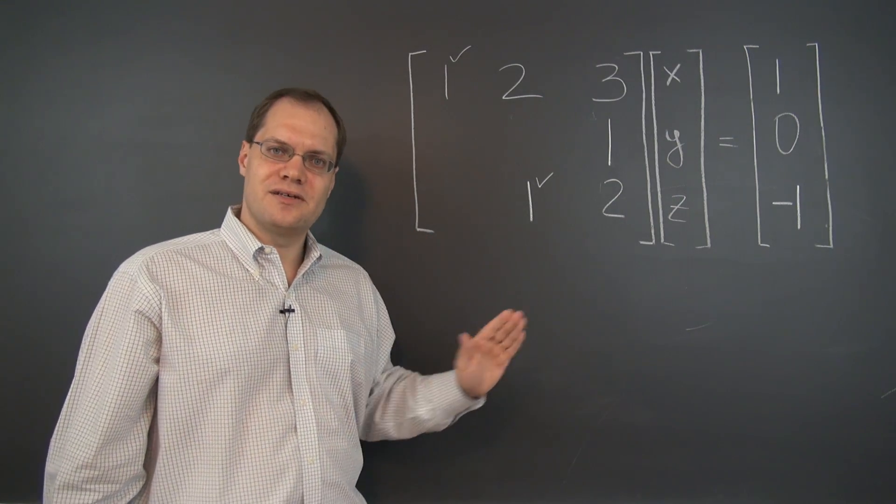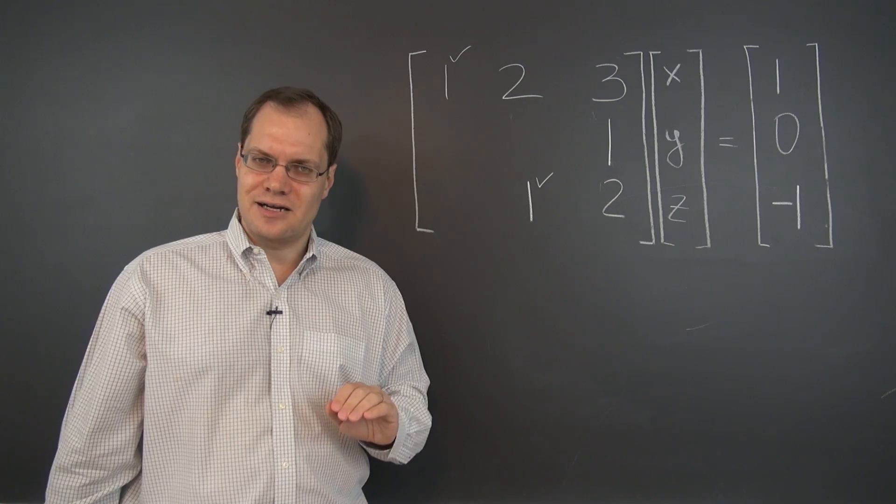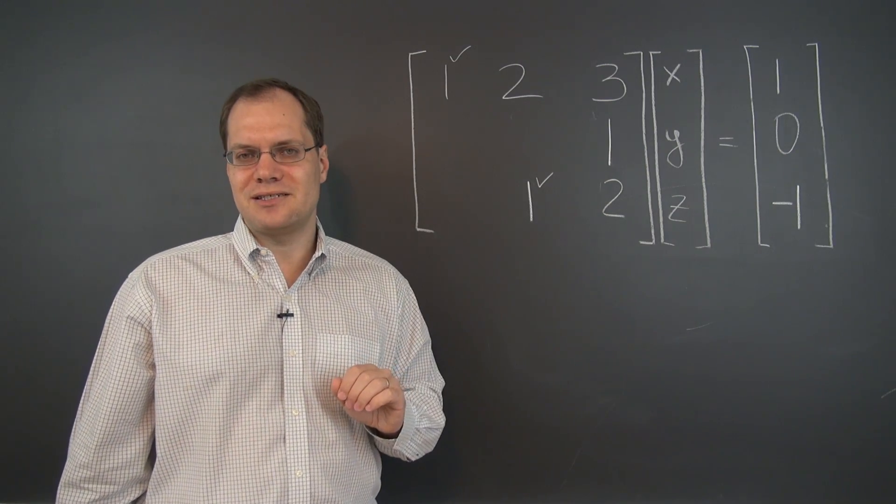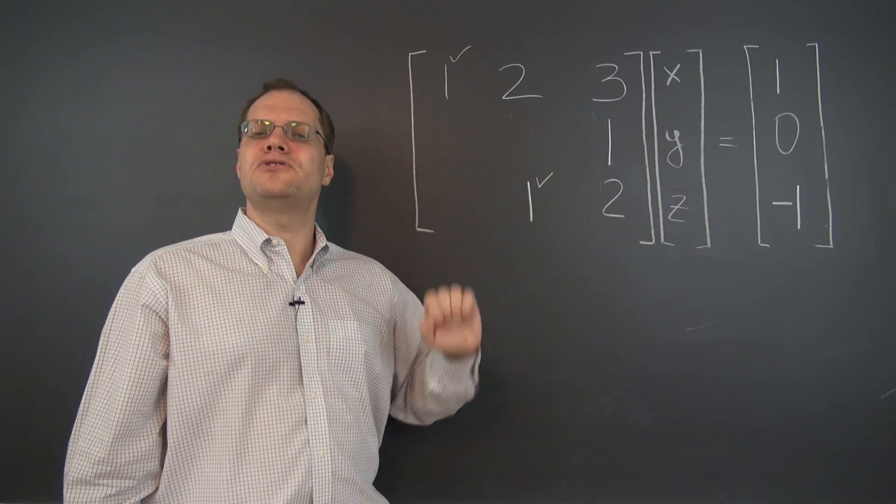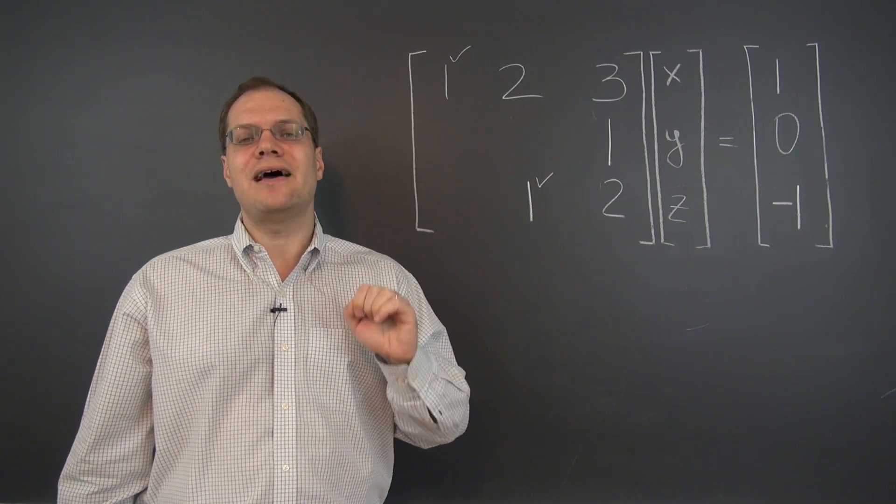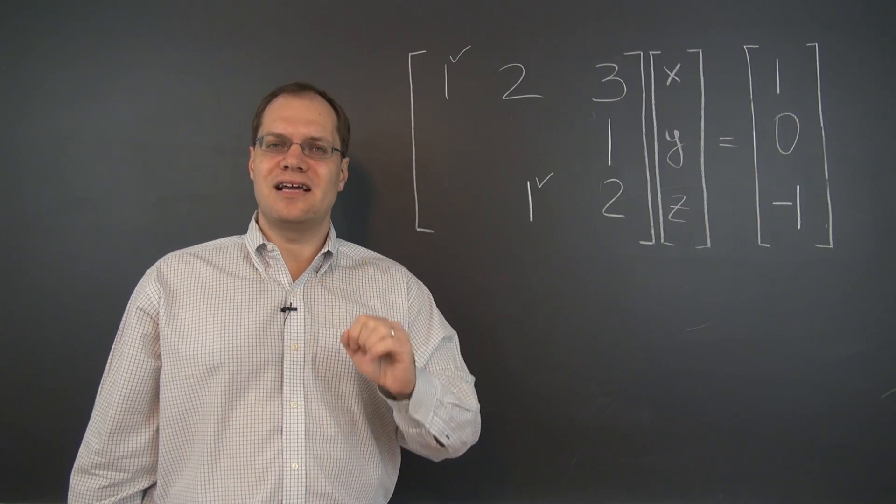Which columns the pivots occur in is not entirely up to us as you will see from the next example. But if we can make it appear earlier then we should certainly take advantage of that. That's part of the convention in Gaussian elimination.